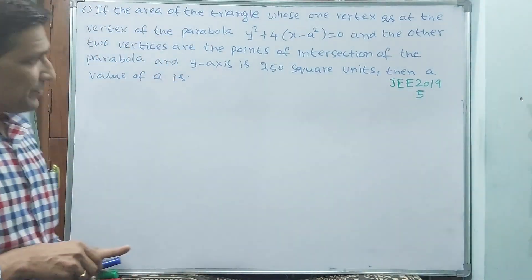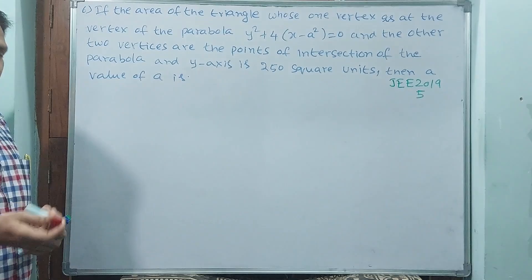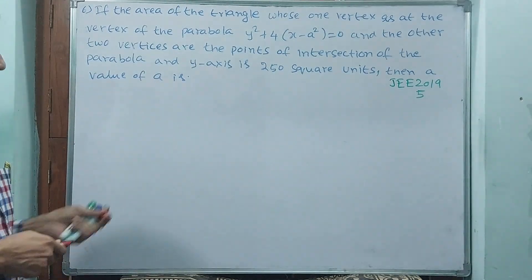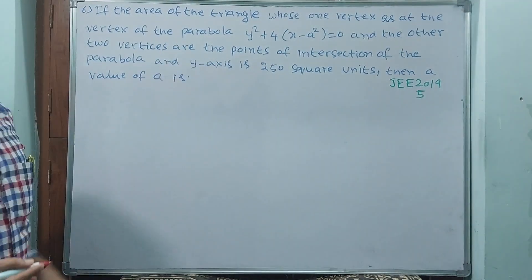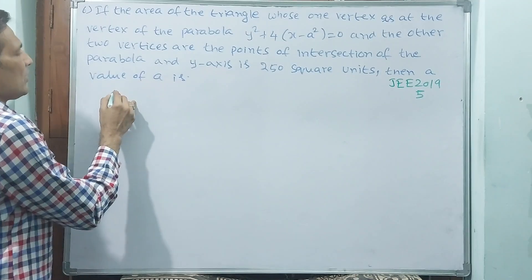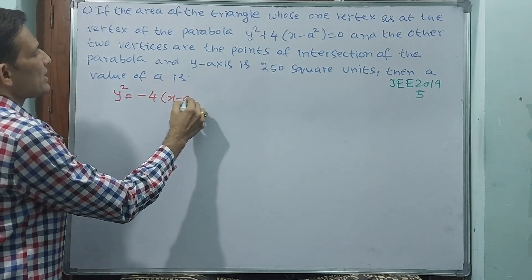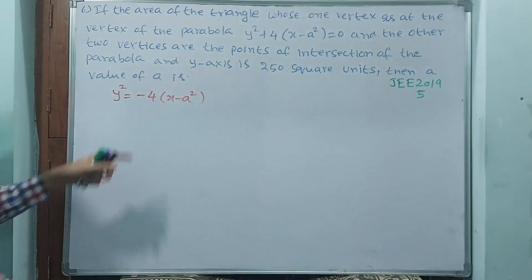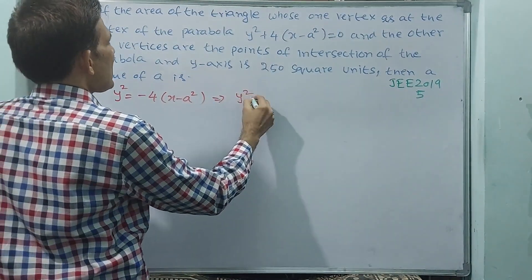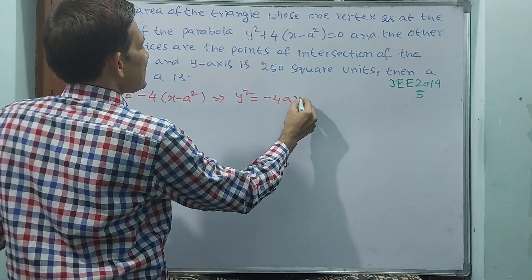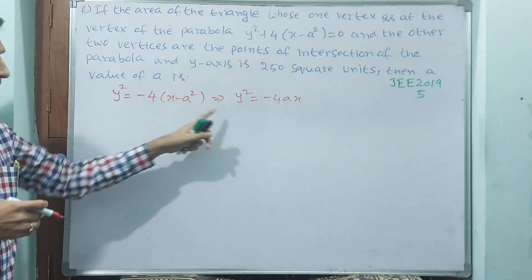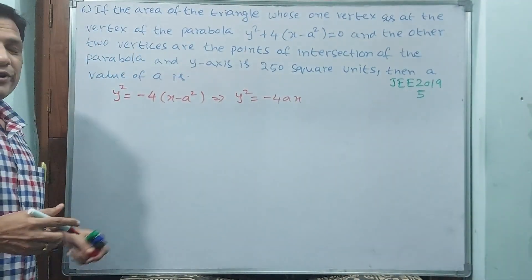See here, if you draw this figure carefully, then you are going to achieve this question. So what you are going to understand based on this formula? See, y square is equal to minus 1 into 4 into x minus a square. This implies y square is equal to minus 4 a x. It's not exactly in standard form.